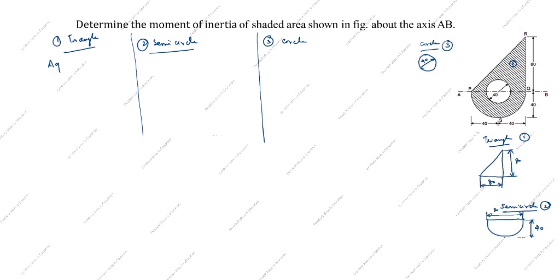The area of a triangle formula is (1/2) × b × h. Here b is 80 and h is also 80. Calculating: (1/2) × 80 × 80 = 3200 mm². So area A1 is 3200 mm².